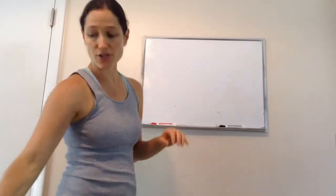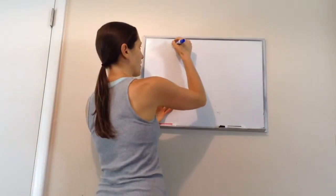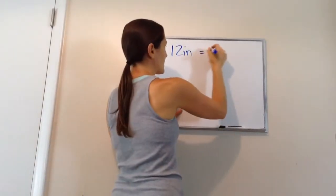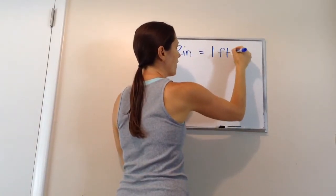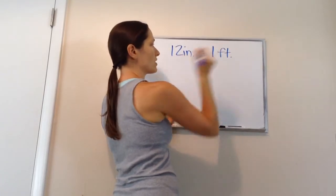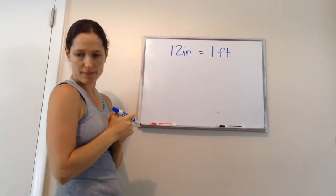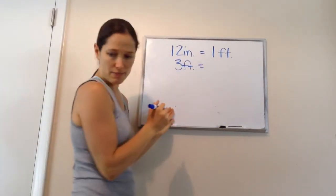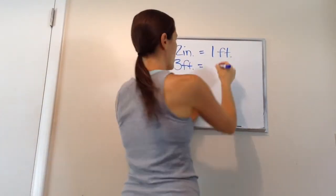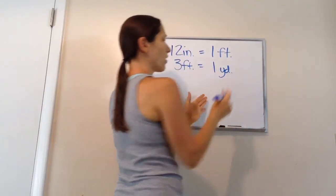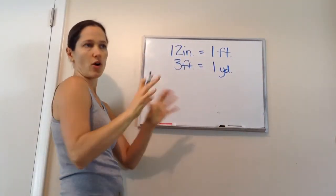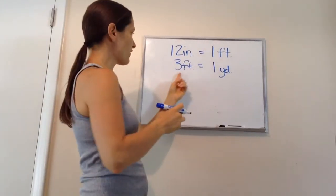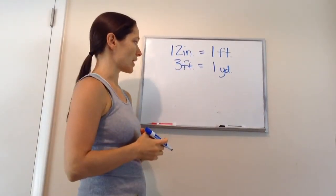All right. Ready to write these down? These are other ones that you need to memorize. Write this down. 12 inches is the same thing as 1 foot. Just this one's in inches, this one's in feet. Here's another one to know. 3 feet is the same thing as 1 yard. Now, I'm not talking about a yard outside. It's a yardstick. 3 feet equals 1 yardstick.